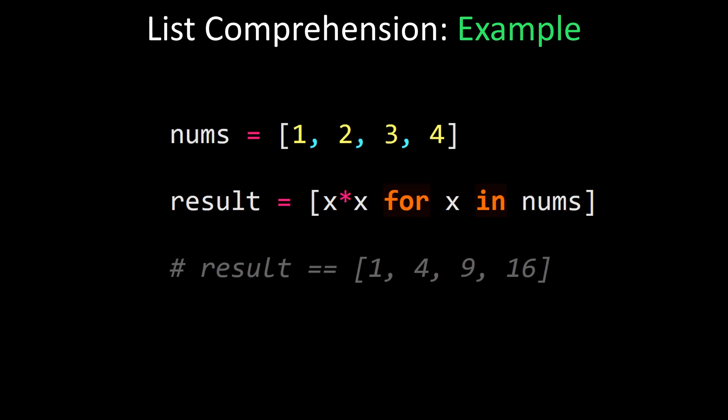Let's look at an example. Input list nums is [1, 2, 3, 4]. The list comprehension squares each element of nums, so x*x for x in nums. That creates a list containing 1, 4, 9, and 16. Simple, beautiful.